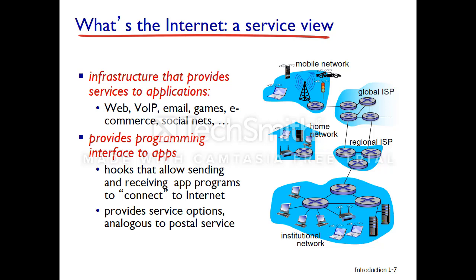Another way of looking at the internet is in terms of services. You can view the internet as infrastructure that provides services to various applications, such as the World Wide Web. These services would provide options analogous to the postal service — with the postal service you might be able to get certified mail, and on the internet there is a way to make sure that the other side has received the data.